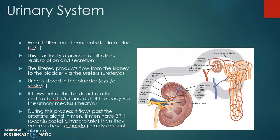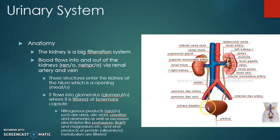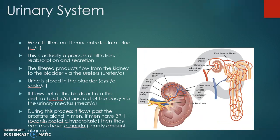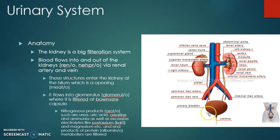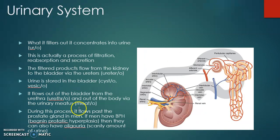What is filtered out is concentrated into urine, which then goes down the ureter and collects in your bladder. Urine flows from the kidneys via the ureters and is stored in the bladder. It then flows out of the bladder through the urethra and out of the body via the urinary meatus. You can see the urinary meatus on the penis or vagina.